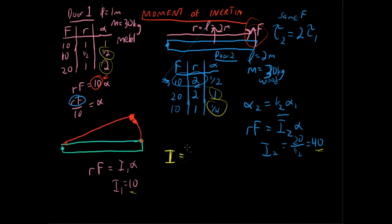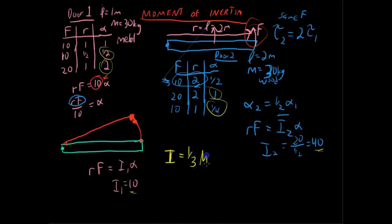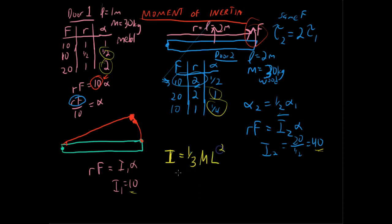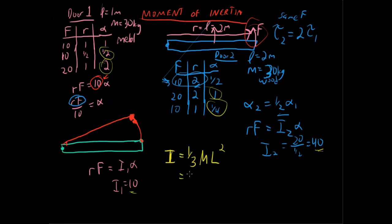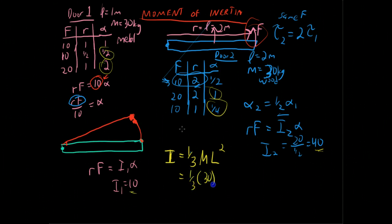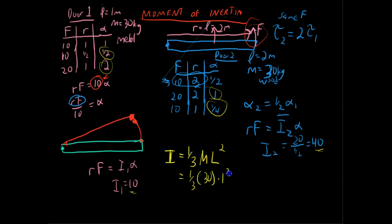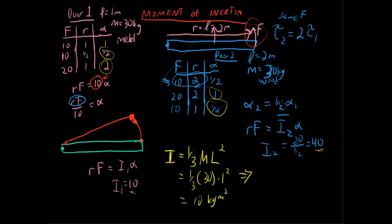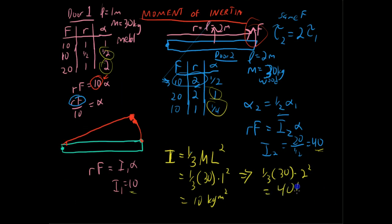What it turns out is that this i, for doors in general, would be one third m l squared. And we can check this out. If I do this for a length of 1, I would get one third of 30 times one squared, which equals 10. And this is kilograms meter squared. If on the other hand, I do it for this door, door number two, I would have one third of 30 times two squared, which is 40 kilograms meters squared.